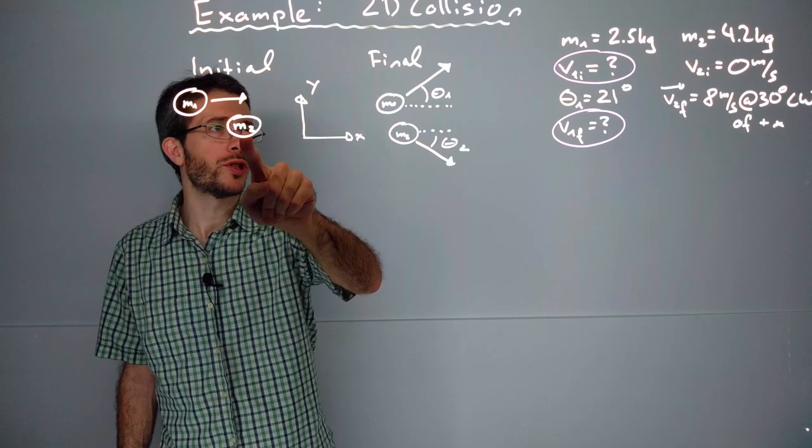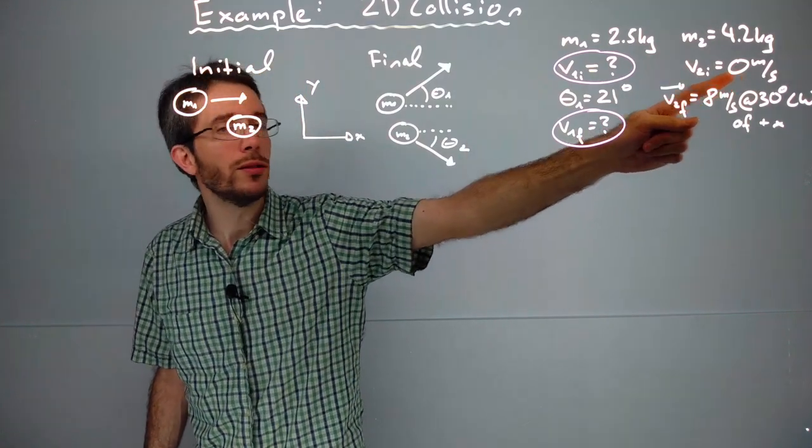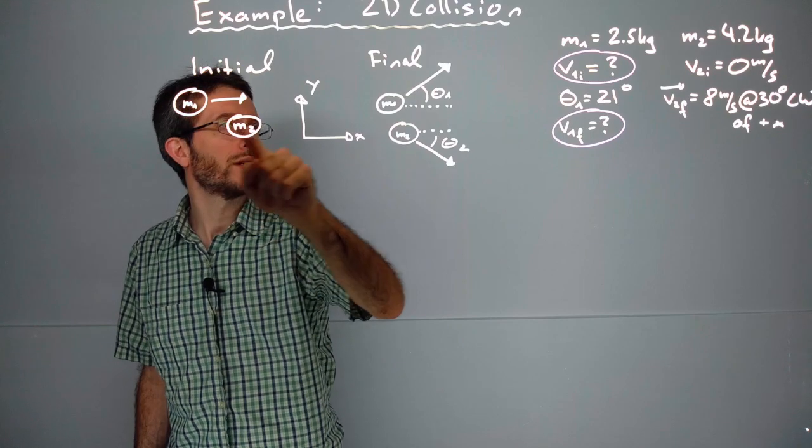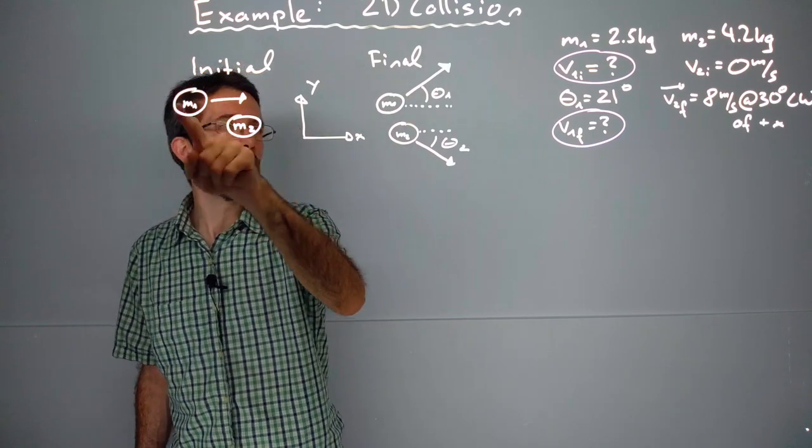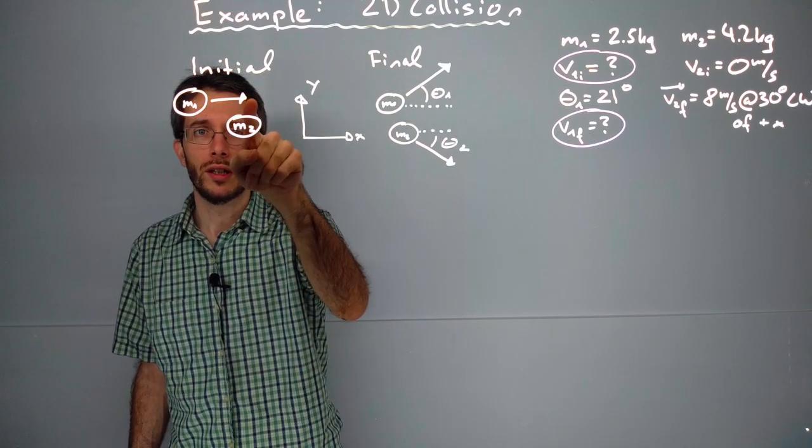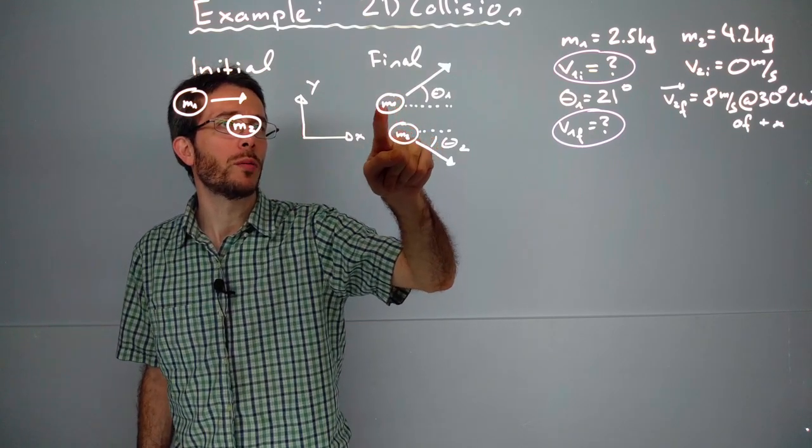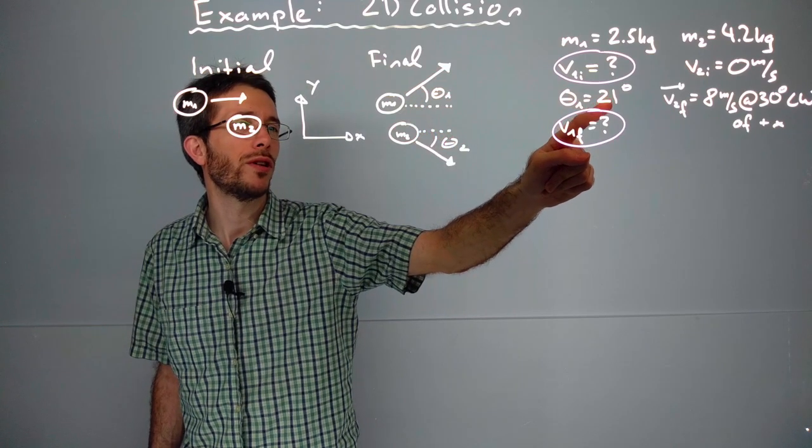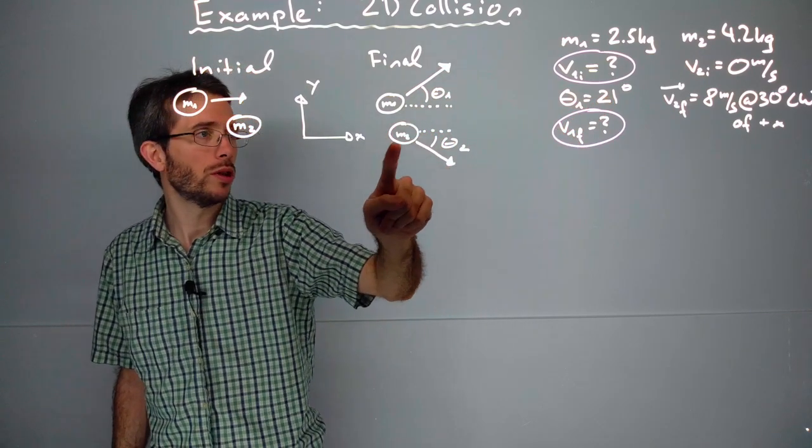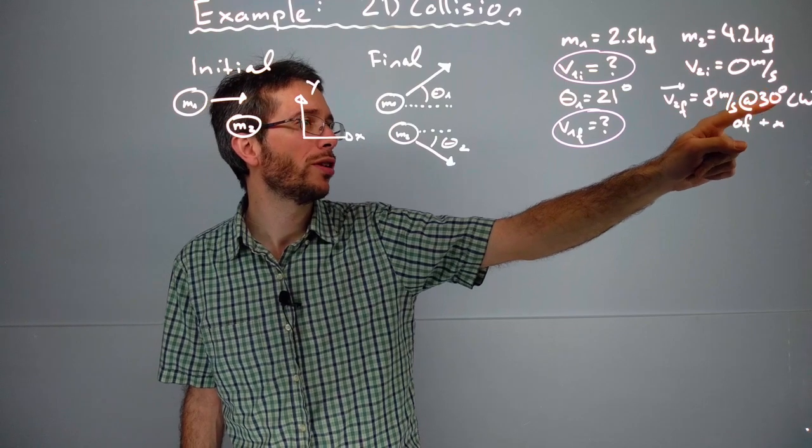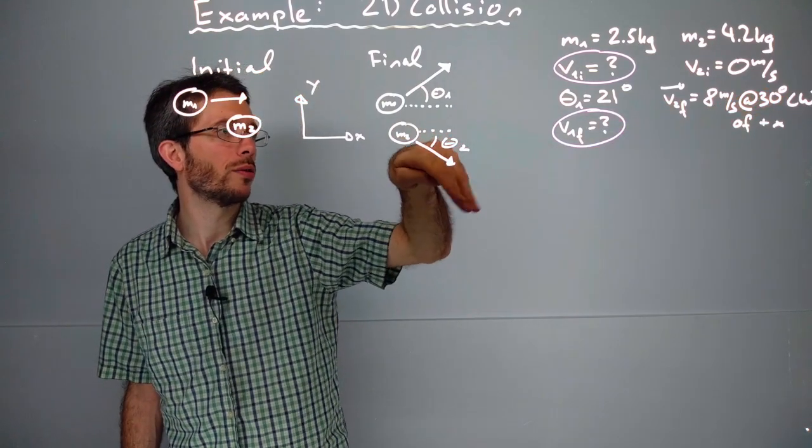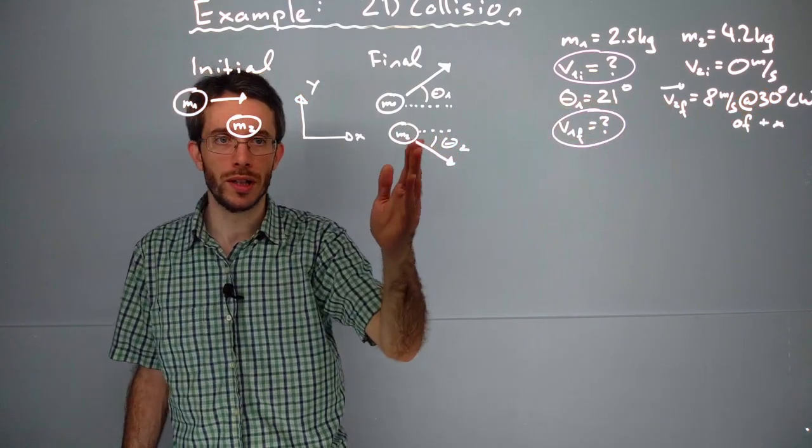We have initially one object which is not moving at all and another object that's moving in the horizontal direction and is going to hit this object. After the collision, object one moves up at an angle of 21 degrees and object two moves down at 30 degrees clockwise from x at a speed of 8 meters per second.